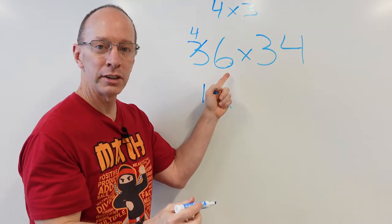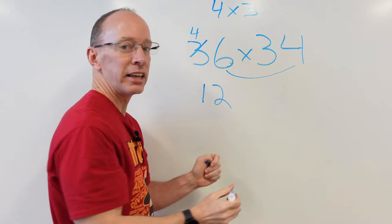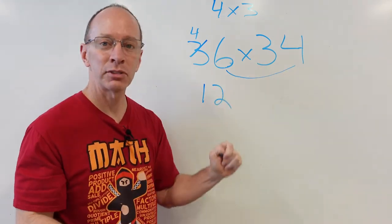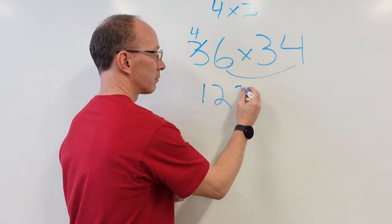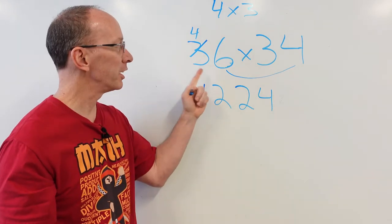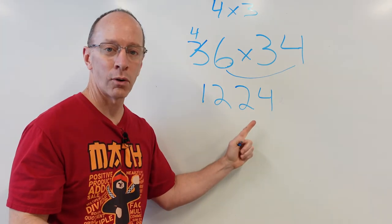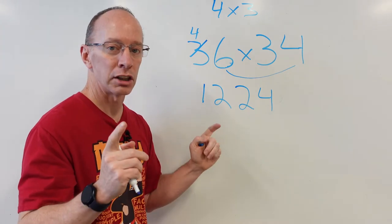Now, what you're going to do is you're going to multiply the ones, the six and the four together. Six times four is twenty-four. So, the answer would be thirty-six times thirty-four equals one thousand two hundred twenty-four. Ready to do another one? Yeah, let's do it. Boom.